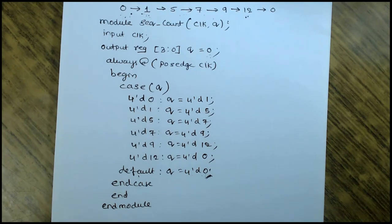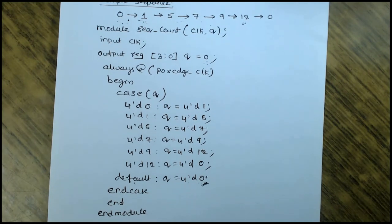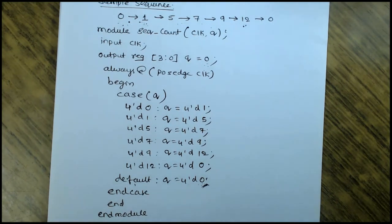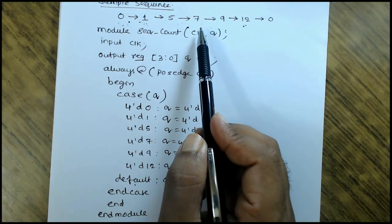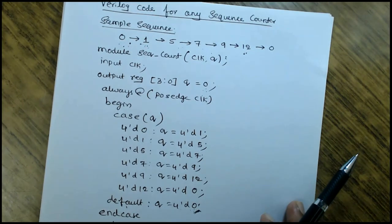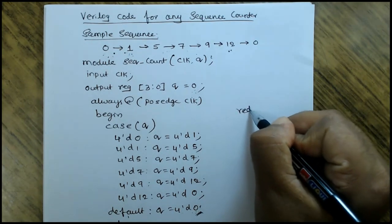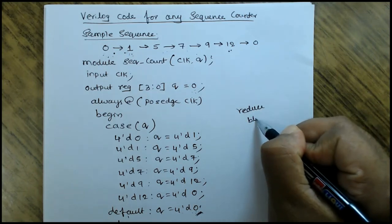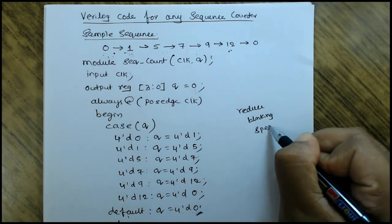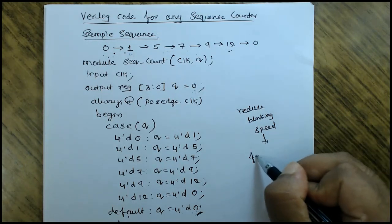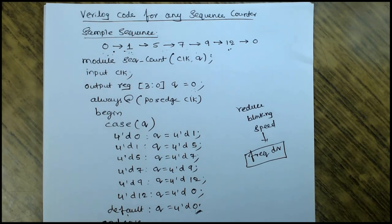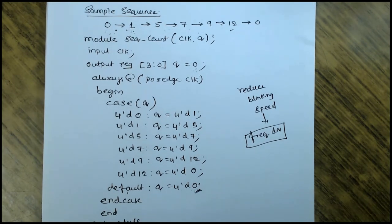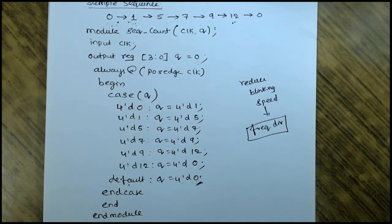In Xilinx environment you can check the same. If you try to implement this in any of the FPGA kits, then this sequence counting will not be able to observe because of high blinking speed. To reduce the blinking speed, what we need to do is use frequency divider - frequency division. That is what we do in implementation of any of the counter on FPGA kit. Only if not, in during simulation, no need of any frequency divider.